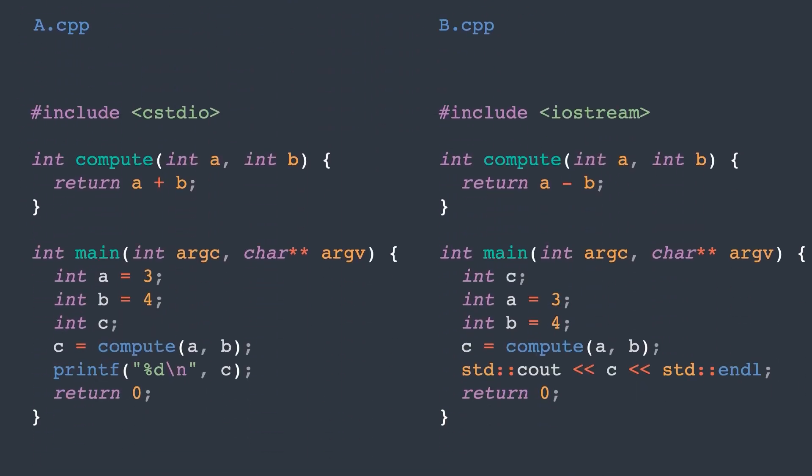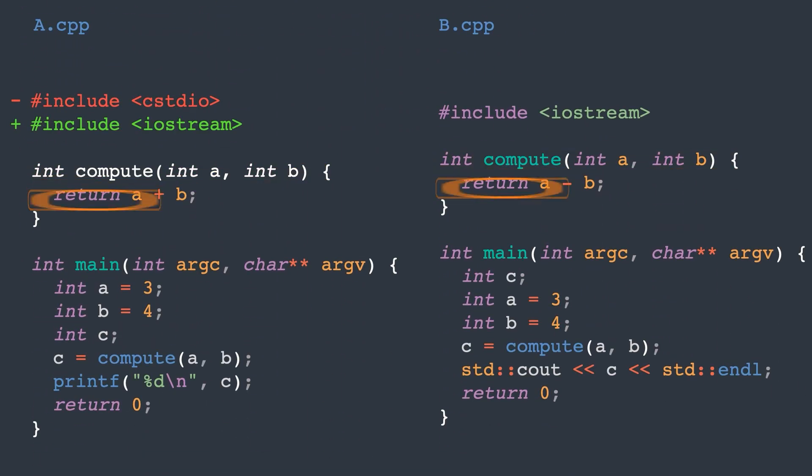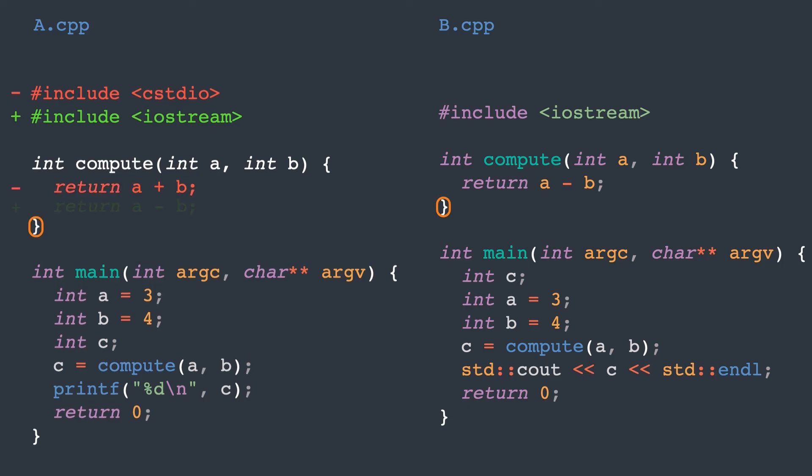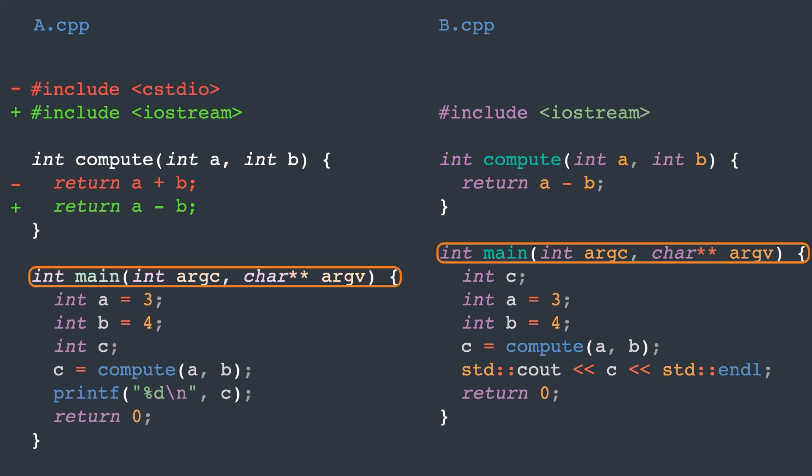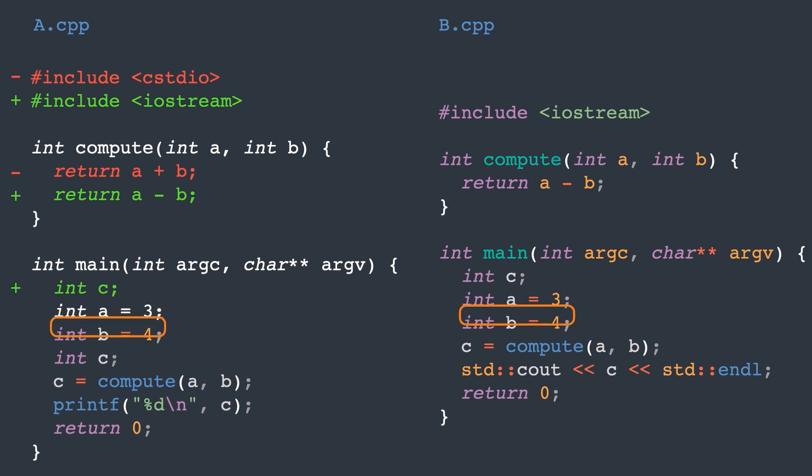The idea is to start with the first line in the longest common subsequence. Lines from file A before the common line are deleted, so we print them with the minus prefix. Lines from file B before the common line are added, so we print them with the plus prefix. Finally, we print the common line and repeat the process.